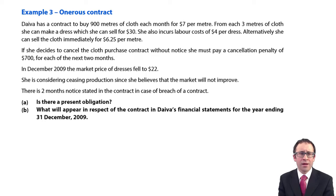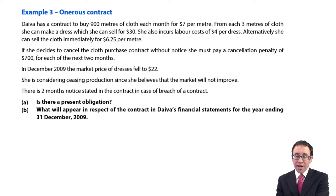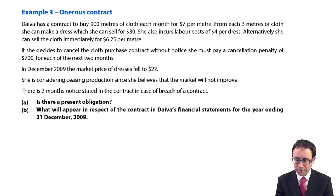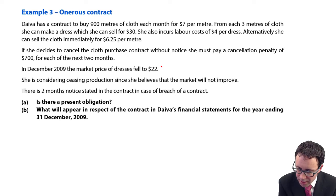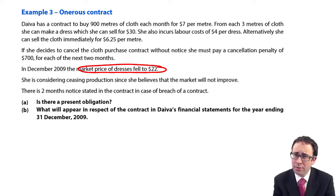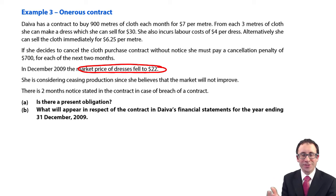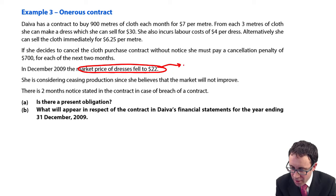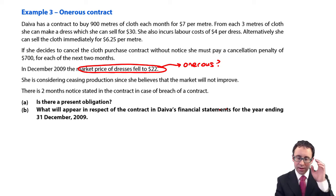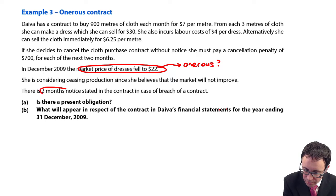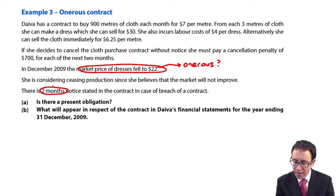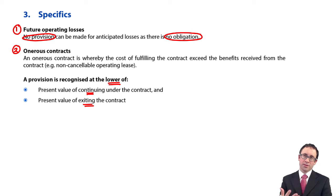At present the contract is not onerous — the benefits exceed the cost, so everything is fine. There is a cancellation penalty of $700 per month for each of the next two months if exiting. However, fashion changes and the market price of the dresses has fallen to $22. The company believes the market will not improve, and there are two months' notice in the contract. We now need to think about whether this contract has become onerous, and compare the cost of continuing versus exiting.